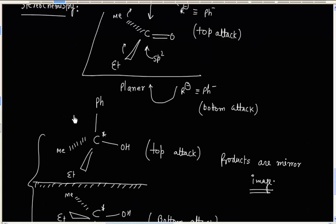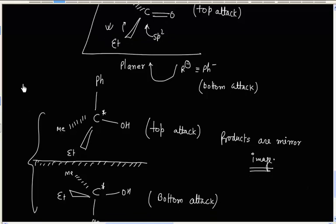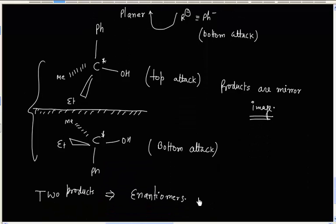This situation — obtaining a pair of enantiomers — is possible only if we have an unsymmetrical ketone, where the two groups on the carbonyl are different. It cannot occur with a symmetrical ketone. In summary, we discussed reactions of Grignard reagent with ketone: a symmetrical ketone gives a tertiary alcohol with two identical alkyl groups; an unsymmetrical ketone gives a tertiary alcohol with three different alkyl groups; and an unsymmetrical ketone also gives a set of enantiomers as products.